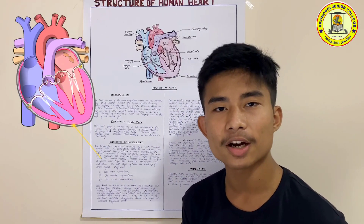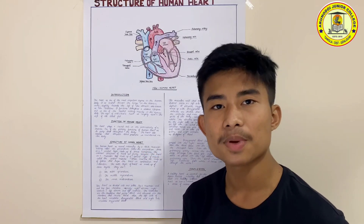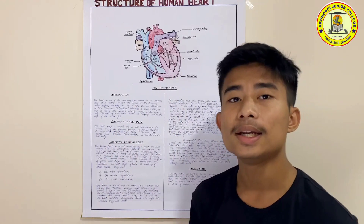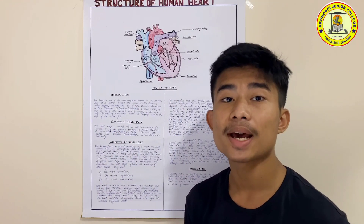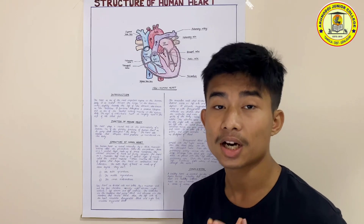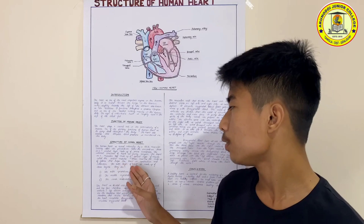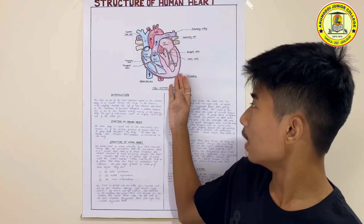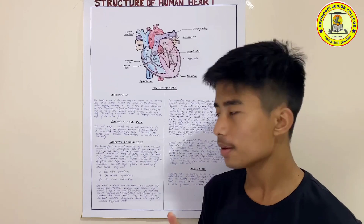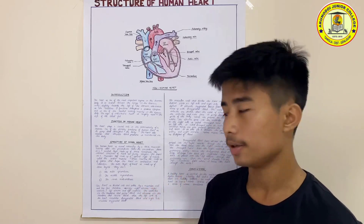Below the pericardium there is a parietal layer of serous membranes. The heart is a muscular bag made up of a special type of muscle called cardiac muscle, which helps in contraction and relaxation. The wall of the heart is made up of three layers: the outer epicardium, the middle myocardium, and the inner endocardium.